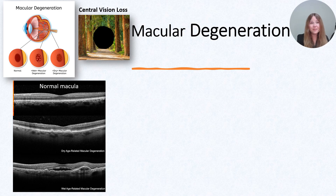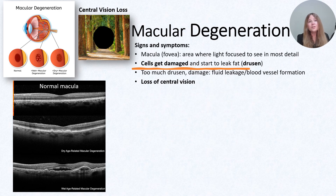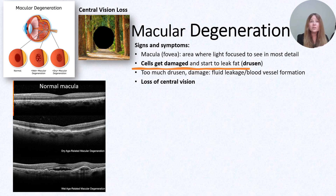We have macular degeneration. The macula, or the fovea, is the center of the eye with the highest concentration of photoreceptors and no blood vessels. This is where light focuses, and this is where we see the most detail. This is actually what's responsible for our detailed central vision.